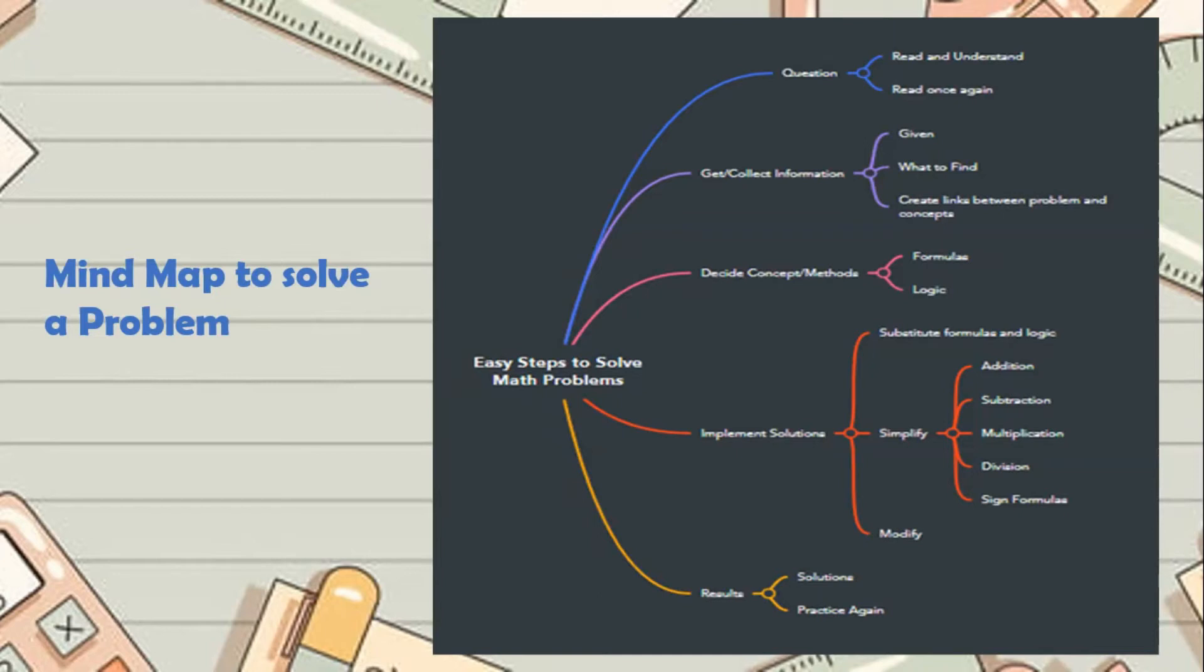Here is a mind map to solve a problem. This shows the step by step procedure to solve a problem. If you see some errors or mistakes on a step, you can easily identify and rectify it. Let's see in detail.